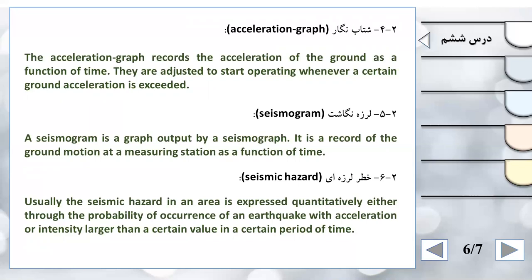لرزه‌نگاشت - Seismogram: A seismogram is a graph output by a seismograph; it is a record of the ground motion at a measuring station as a function of time. سیزموگرام نمودار خروجی لرزه‌نگار است و رکوردی از حرکت زمین در آن ایستگاه اندازه‌گیری به عنوان تابع زمان است.